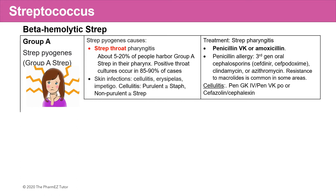Going back to strep pharyngitis — how do we treat that? Penicillin VK or amoxicillin can be used, as Strep pyogenes is exquisitely sensitive to penicillin. If you have a penicillin allergy, you can use a third-generation oral cephalosporin — either cefdinir or cefpodoxime — or clindamycin or azithromycin. For cellulitis, either IV or oral penicillin or first-generation cephalosporins can be used.